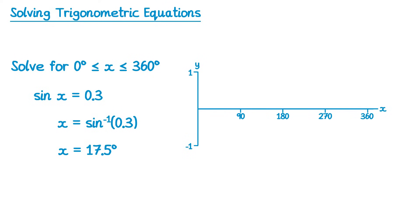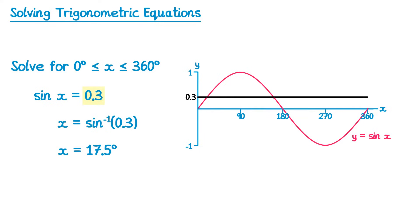Let's draw the graph of sine of x. Sine of x starts at 0, goes up to 1 at 90, back down to 0 at 180, then down to negative 1 at 270, and back to 0 at 360. We're trying to find sine x equals 0.3, so we mark 0.3 on the y-axis, draw a horizontal line, and find there are two intersections. We can already see one of those at 17.5 on the left, but what's the solution over on the right?